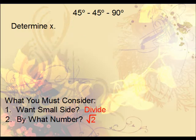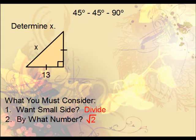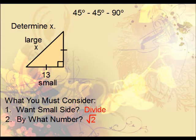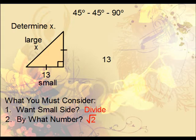In another example, the triangle is identified as 45-45-90 because it is isosceles. Here x is the largest side — the right angle points at it — so we multiply. The only number given is 13, so multiply by root 2, the magic number for this triangle.